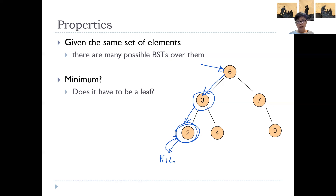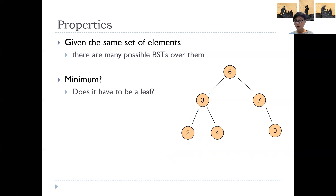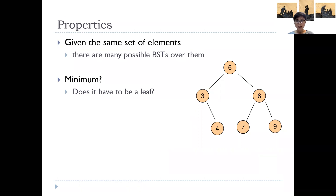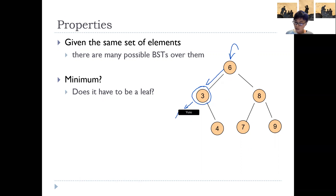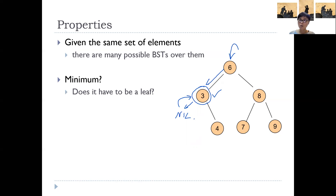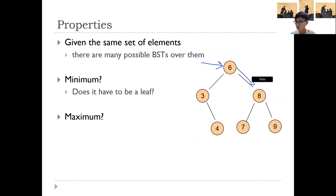Does the minimum have to be a leaf? Not necessarily. In this particular case, the minimum two is a leaf node. But consider another example: starting from the root, going left we reach node 3, whose left subtree is nil — so 3 is the minimum, yet 3 is not a leaf node. The minimum simply has to have no left child, because if it had a left child there would be someone even smaller. The symmetric argument holds for the maximum: you keep following the right pointer until you cannot go right anymore, and then you've found the maximum.